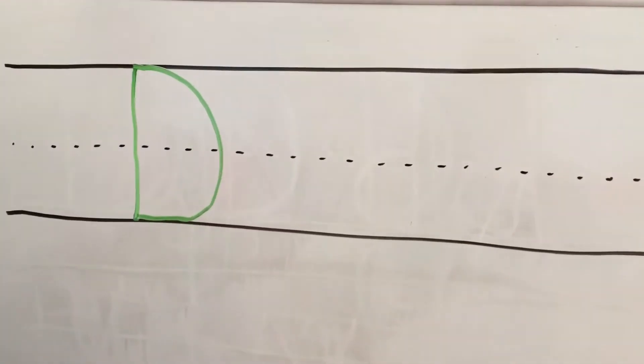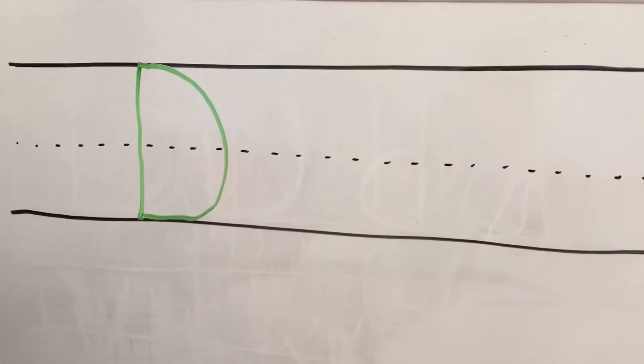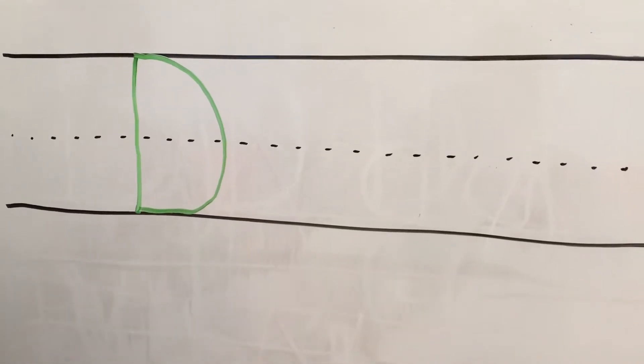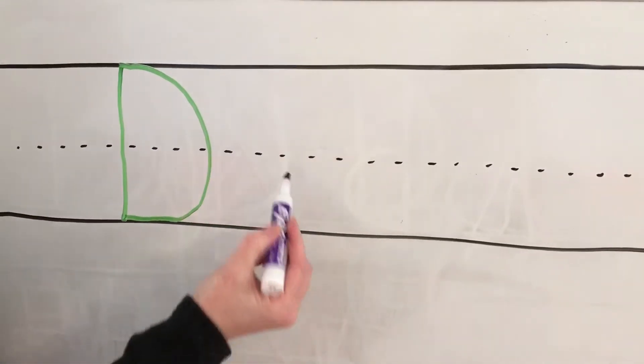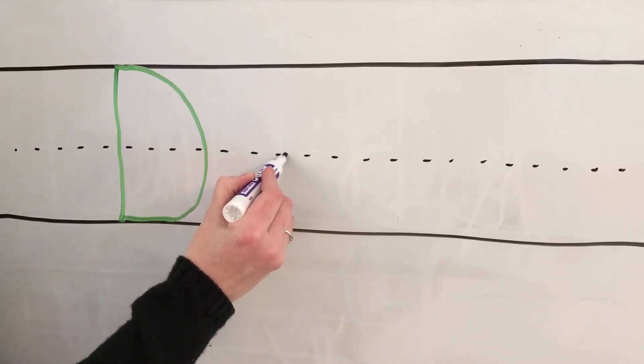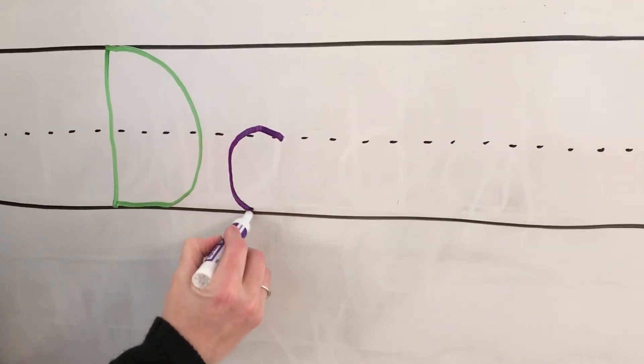For lowercase d, we tell the kids to start with the letter c, so a, b, c, d. So unlike a b that starts at the top, a d starts in the middle. They're going to make a lowercase c shape, so a magic c shape.